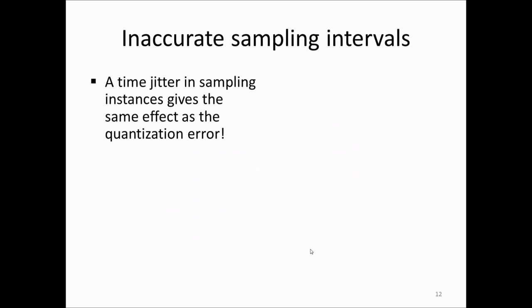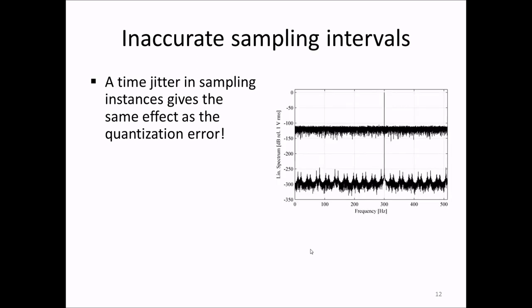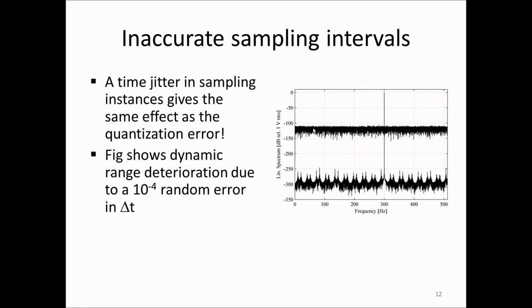Another thing that leads to a reduction in dynamic range in spectrum measurements is if the sampling instances are not occurring at very equal distances in time, that is, if there is a time jitter in the sampling instances. In the plot here, a simulation result with two spectra is shown. One spectrum is using the entire accuracy of MATLAB, resulting in approximately a 250 dB dynamic range. And the second spectrum is from a case where there has been added an inaccuracy on the sampling instances of 10 to minus 4.